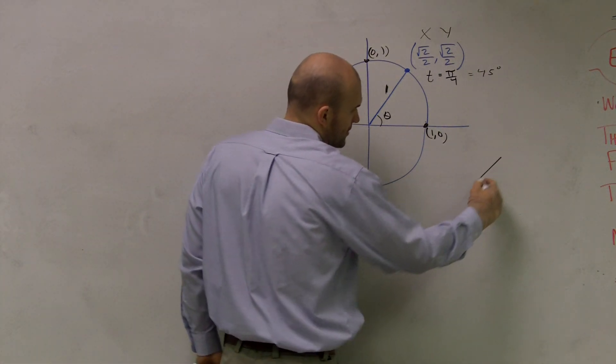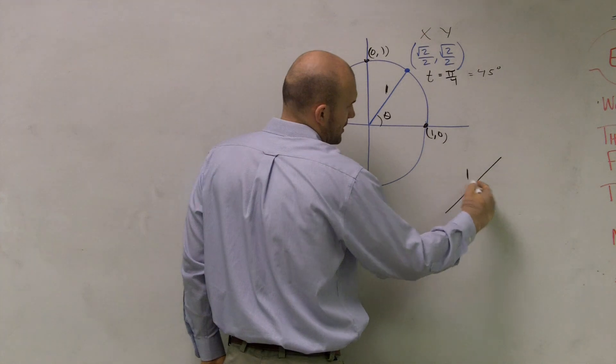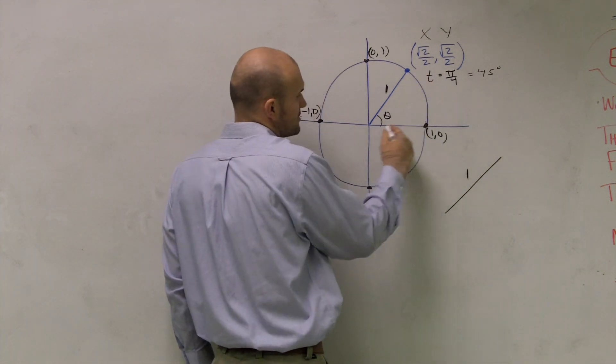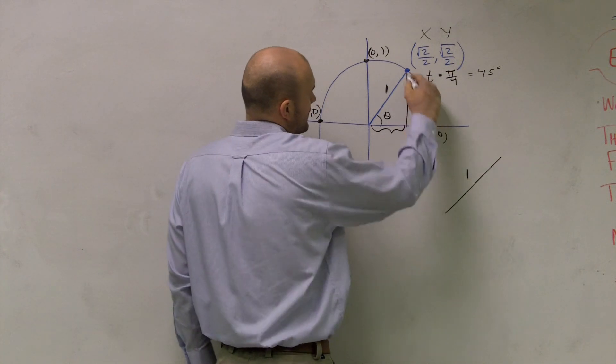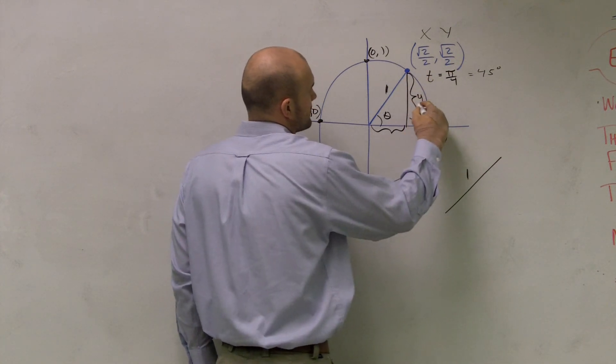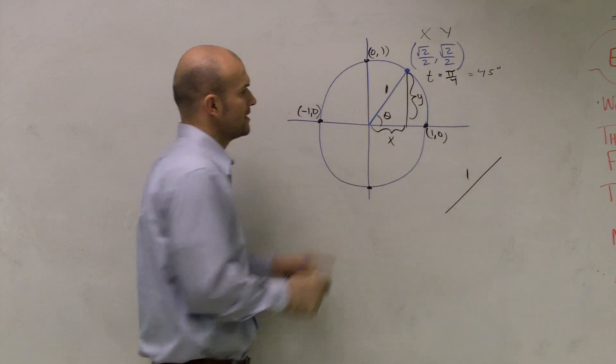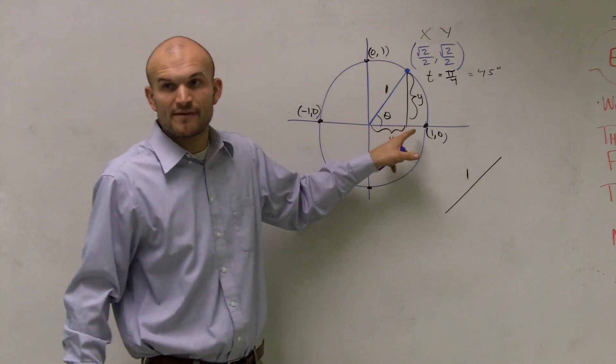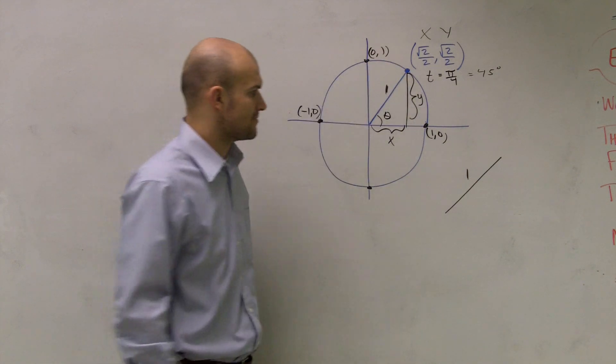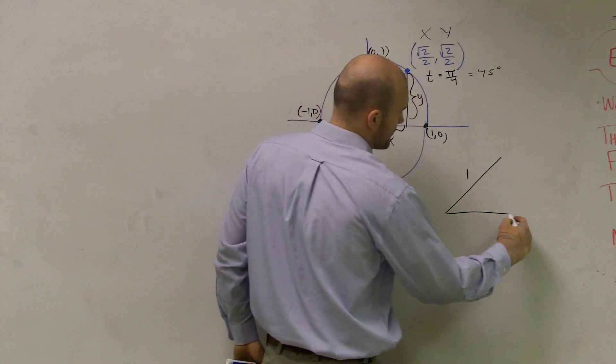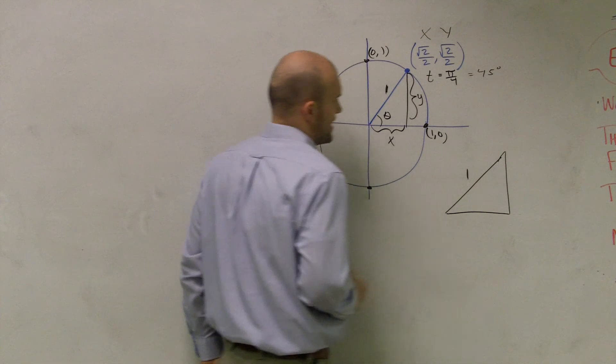I'm going to draw a radius of 1. Remember, x and y tell you how far we moved. We have an x and a y coordinate. x tells you how far you moved away from the origin on the x-axis, and y tells you how far you moved away on the y-axis.